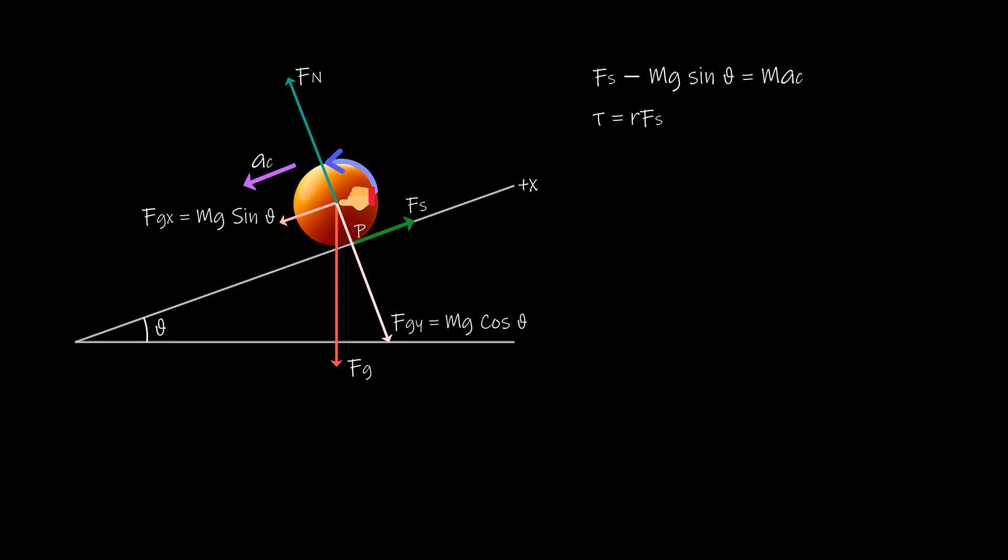Now we can write Newton's second law in its angular form and that would be torque net equals I center of mass times alpha about an axis through the body's center of mass. Putting the expression for torque from this equation we get R times FS equals I center of mass times alpha. What we find is that this equation again contains two unknowns, that is FS and alpha.